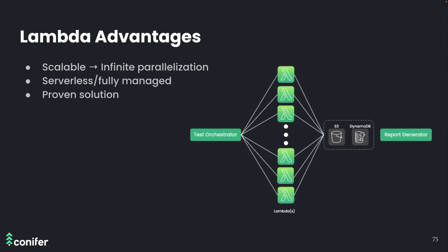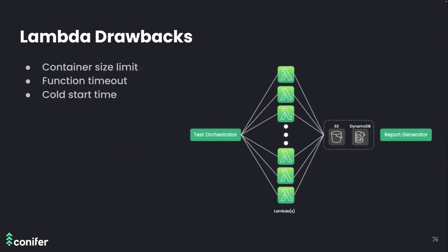There are a few drawbacks to Lambda. The container size limit — recently increased to 10 gigabytes — is more workable now but still a constraint. The Lambda function timeout is only 15 minutes, though with infinite parallelization it's unlikely a single Cypress test file would exceed that. Cold start time varies based on what the Lambda function is running, and would need validation with real-world data.